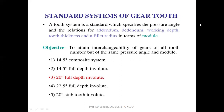Depending upon these parameters, gear pairs are classified as follows: the 14.5 degree composite system, 14.5 degree full depth involute, 20 degree full depth involute, 20.5 degree full depth involute, and 20 degree stub involute. Out of these five, the most commonly used is the 20 degree full depth involute.